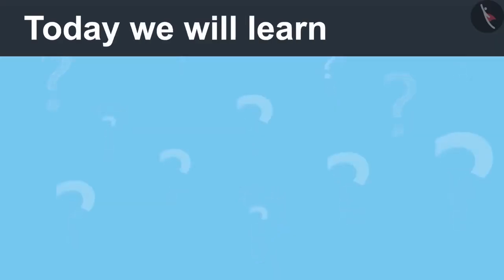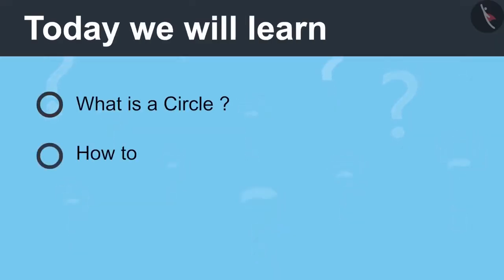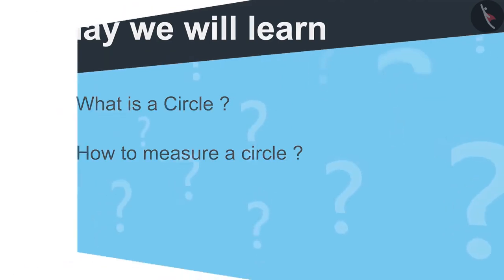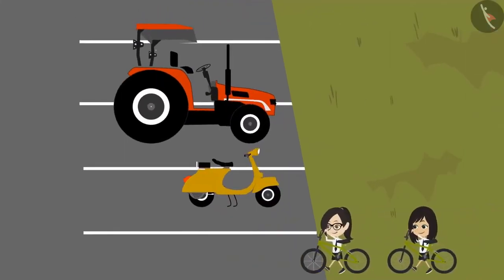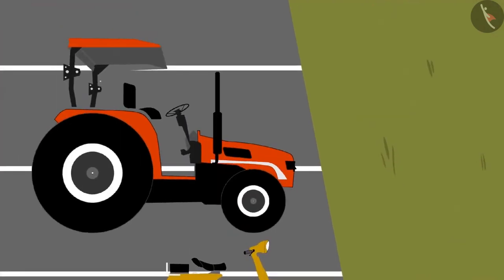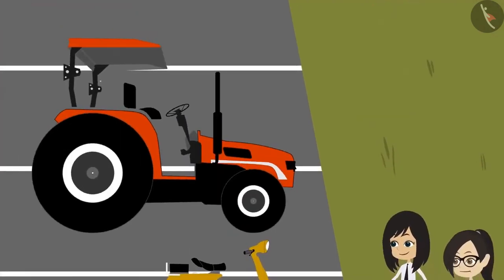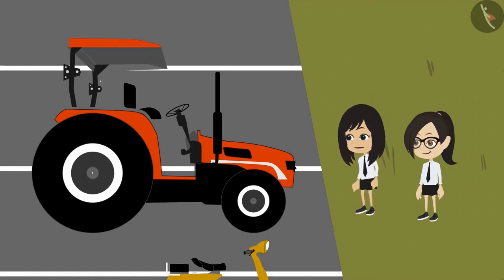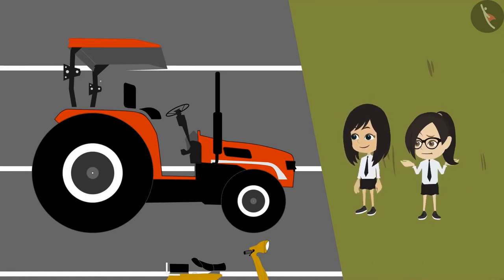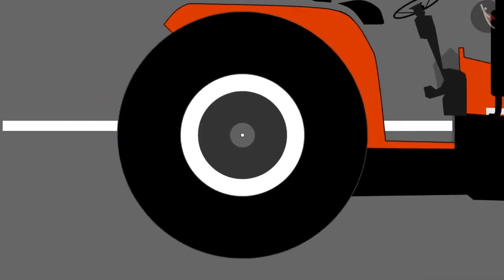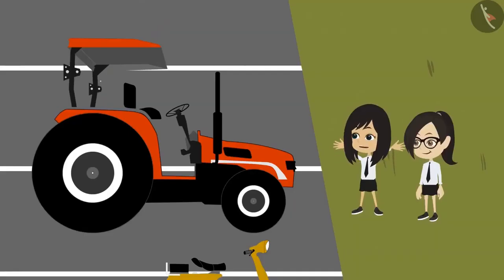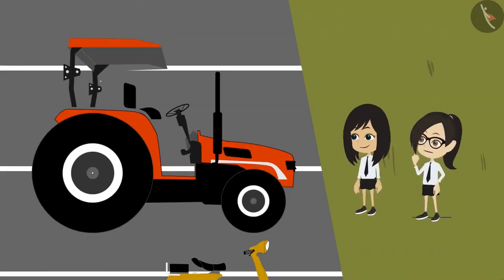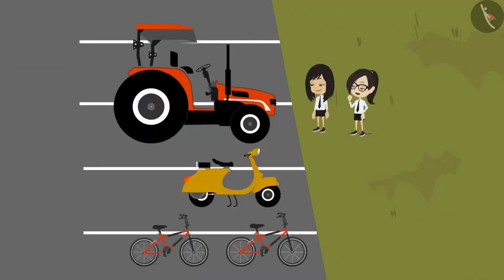Today we will learn what is a circle and how to measure a circle. Vandana looks at a tractor up close for the first time, and is shocked to see its tires — they are almost as big as the children themselves. Compared to the tractor tires, the tires of their bicycles look very small.